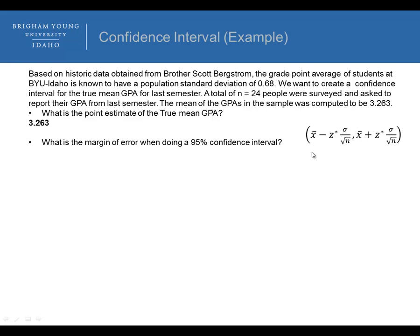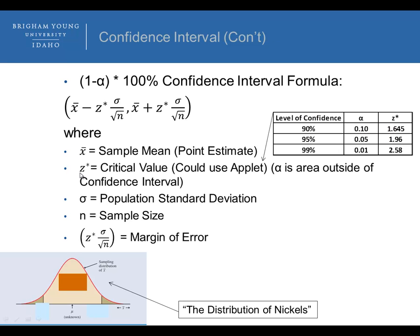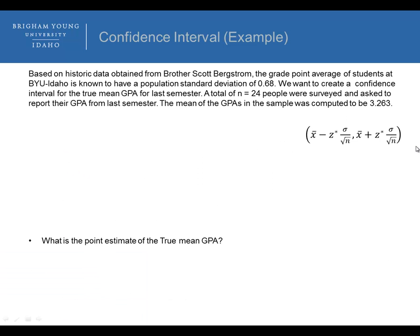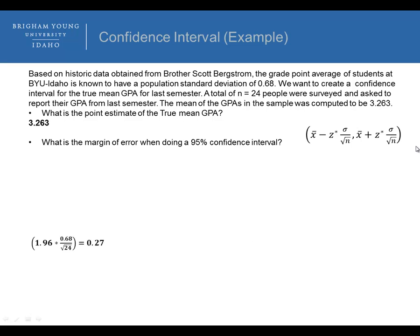The next question: what is the margin of error when doing a 95% confidence interval? The margin of error is the critical value Z times the standard deviation divided by the square root of the sample size. Since we're doing a 95% confidence interval, our critical value is 1.96. Multiplying 1.96 times 0.68 divided by the square root of 24, our margin of error is 0.27.